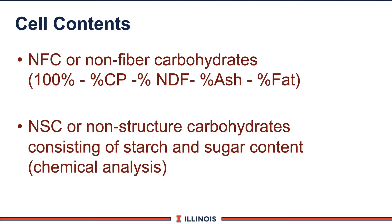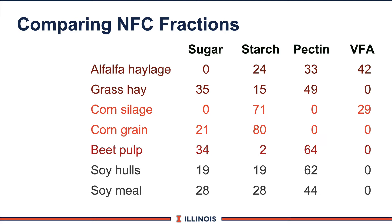Non-structural carbohydrates reflect starch and sugar, and these can be either calculated or chemically analyzed. This table from NRC compares different NFC fractions. You can see how variable this NFC fraction can be. For example, corn silage is extremely high in starch and volatile fatty acids, compared to beet pulp, which has lots of sugar and lots of pectin. The trick, of course, is to balance these out in your feeding program.